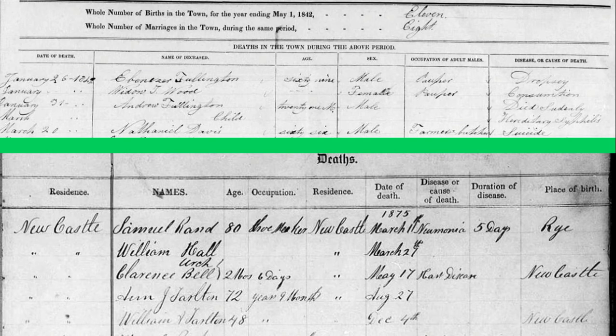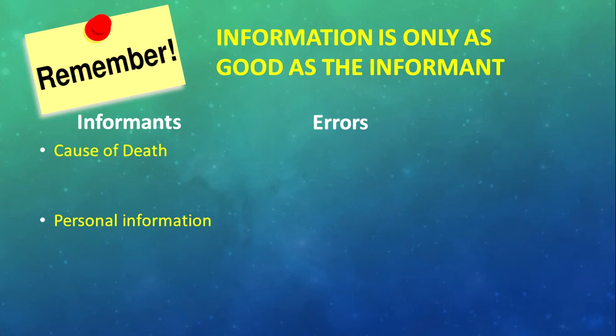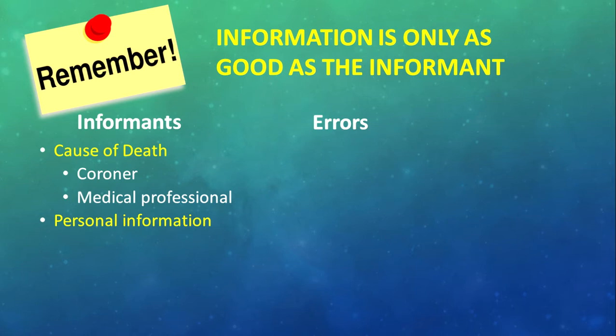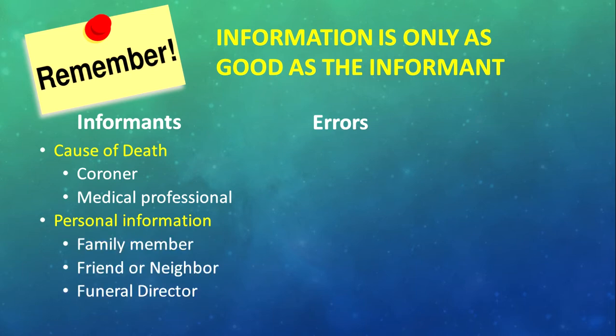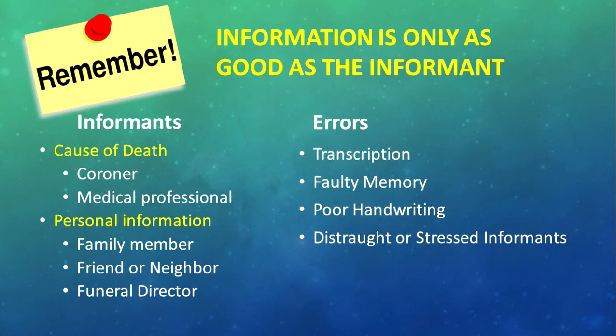Some other types of records you might find are church books listing all members who had passed away, or town records with all the people who died during a specific year in that town. Please keep in mind that the information on a death certificate is only as good as the informant. For the cause of death, the informant could be the coroner or a medical professional. For personal information about the deceased, it's probably going to be a family member, maybe a friend, neighbor, or sometimes the funeral director. To err is human, so there might be errors in your death certificates.